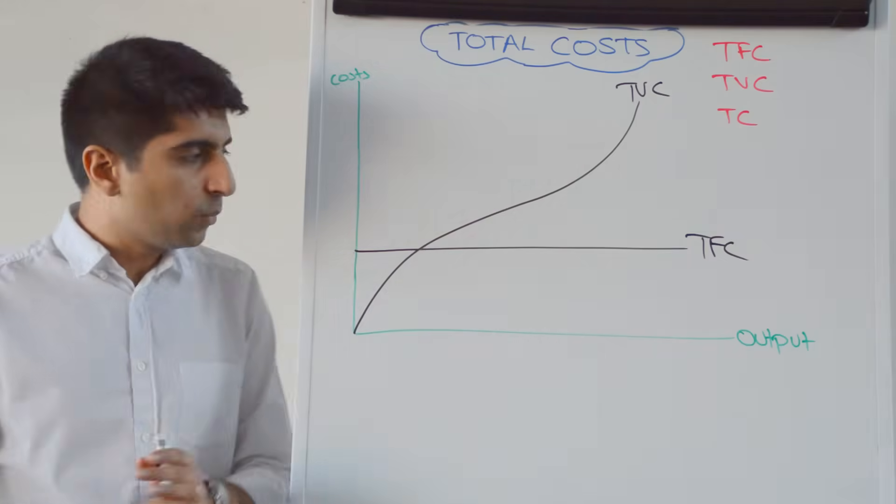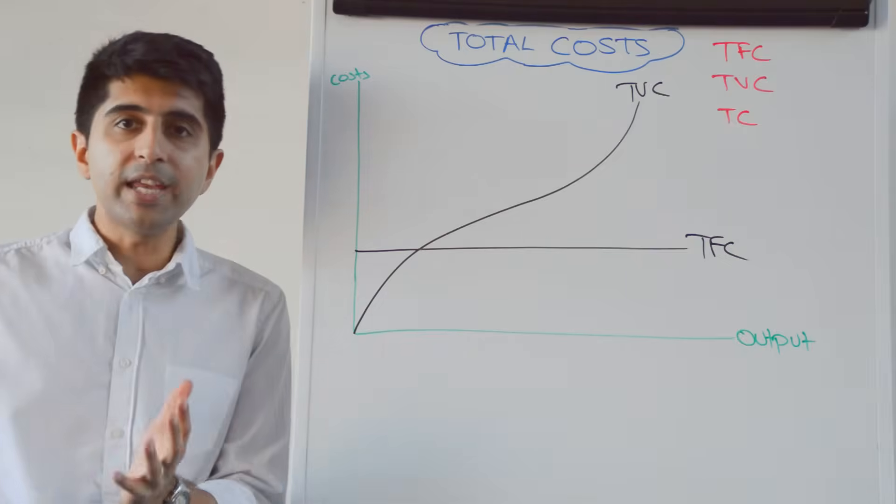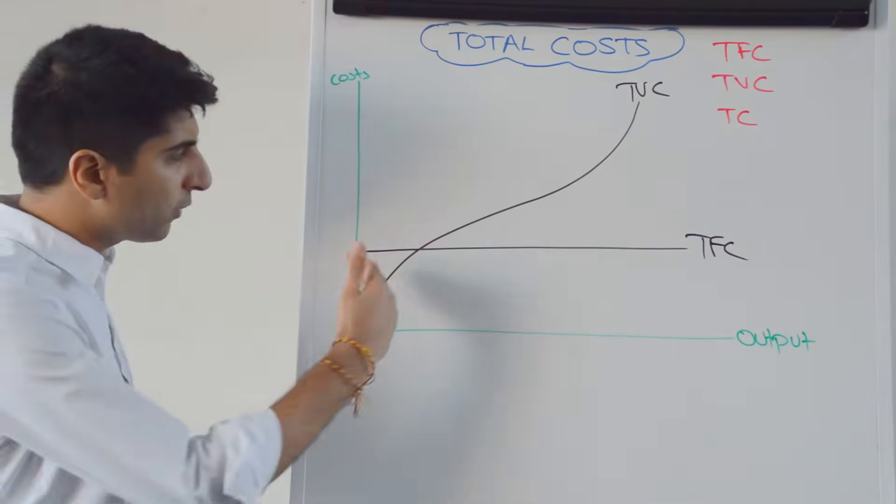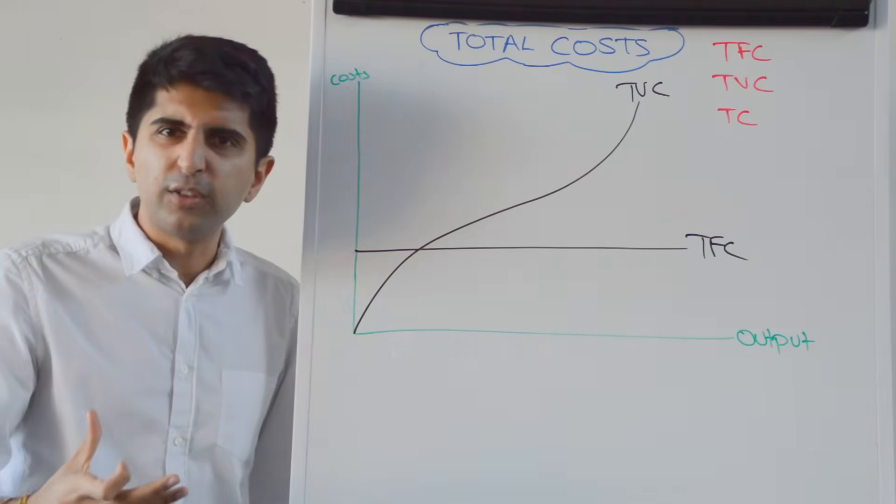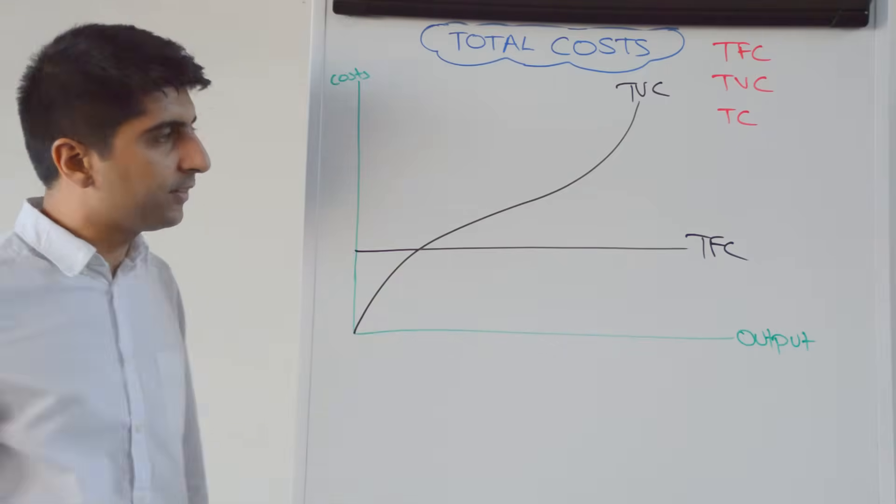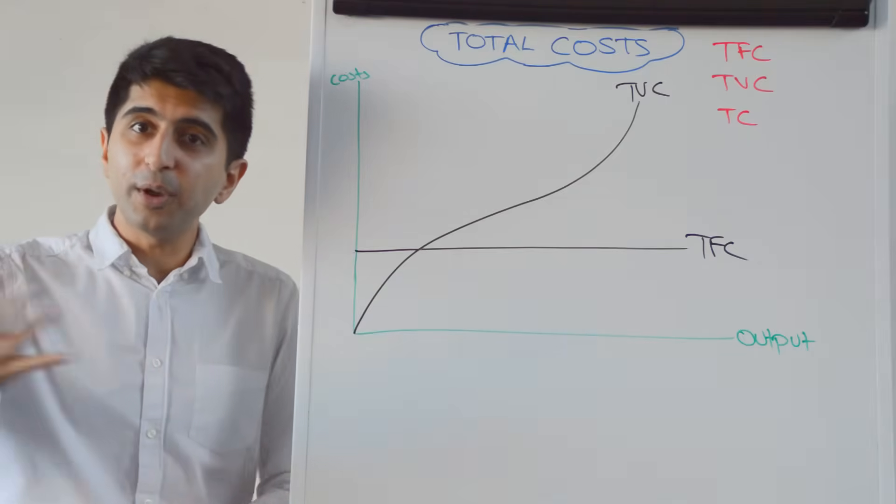Initially, we hire some workers, so the variable cost in terms of wages that we are paying is quite high and that's reflected by the level of cost initially. That's the initial cost to get the initial amount of labor. It takes a certain amount of wages to pay those workers that we hire.